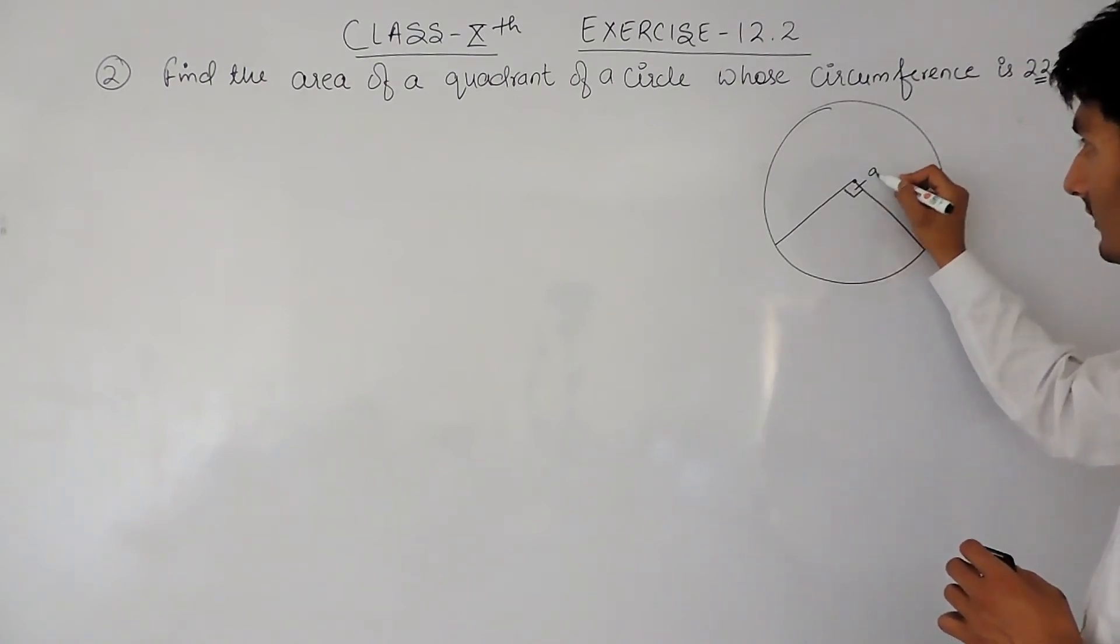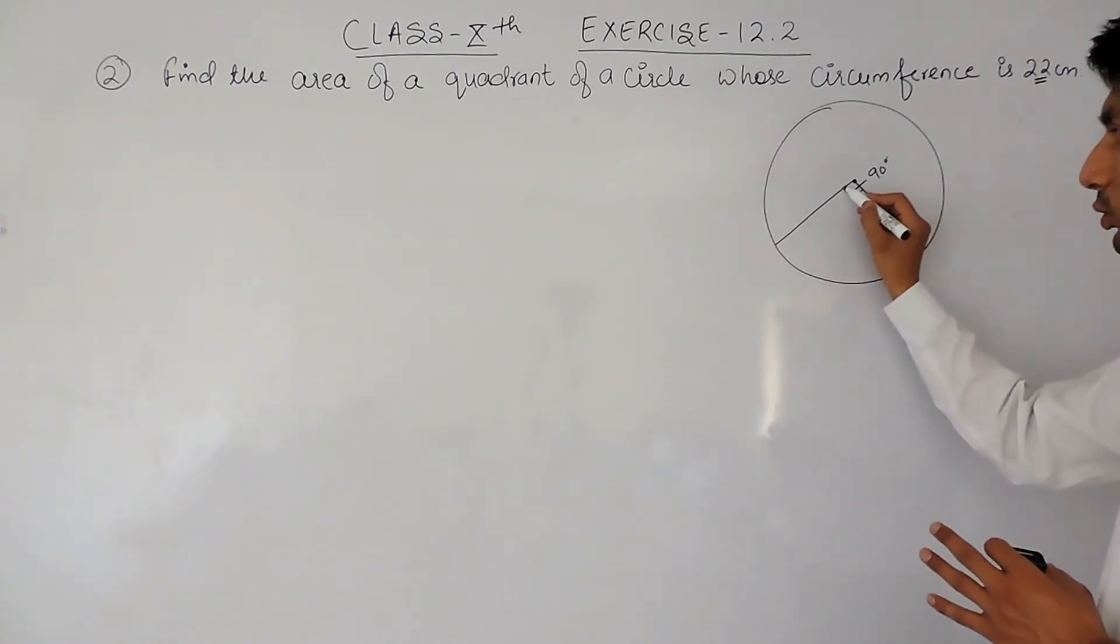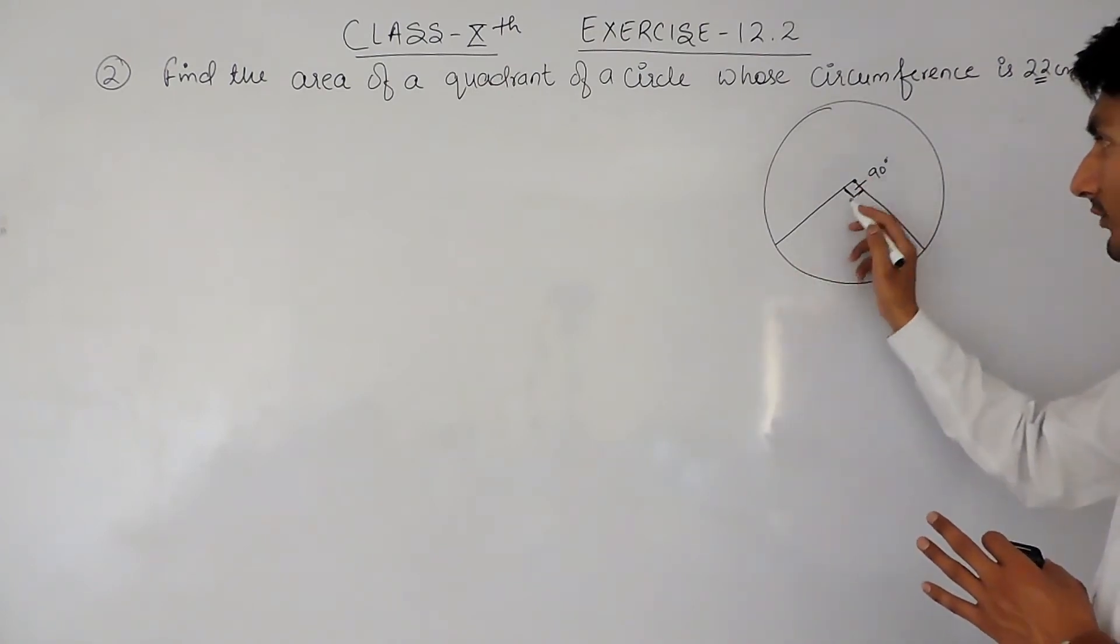Okay, so I have to find the area of this quadrant, or you can say the sector whose central angle is 90 degrees, or you can say where angle subtended at the center equals 90 degrees.